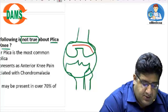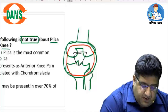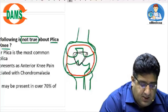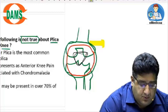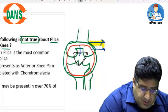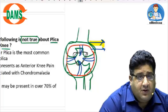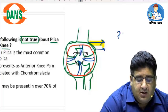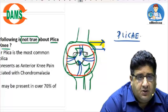Every joint has a capsule, and the inner layer of the capsule is the synovium. Now, plica is an embryonal remnant of the synovium. There are certain synovial folds — synovial invaginations — which in singular are called plica, and in plural they are called plicae. They persist in more than 70% of the population.